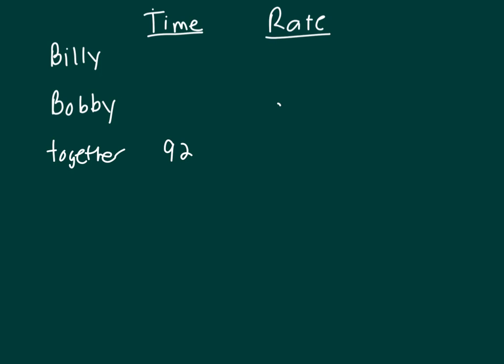Billy could mow the lawn by himself in 35 minutes less time than it would take Bobby. It doesn't tell me anything about Bobby's time, so let that be X, and we're trying to figure out Bobby's time anyway. Billy could mow the lawn by himself in 35 minutes less than Bobby, so that would be X minus 35.